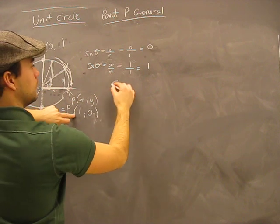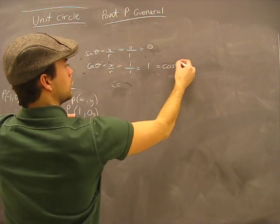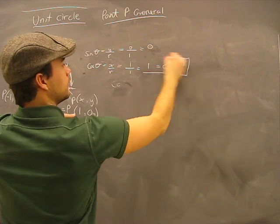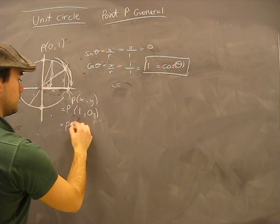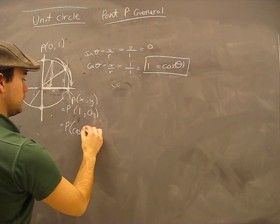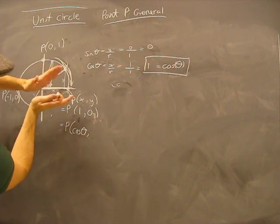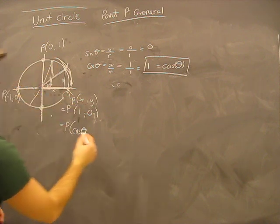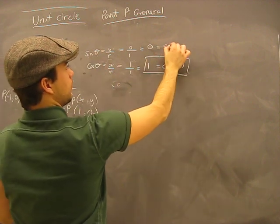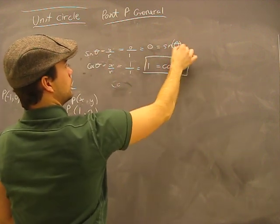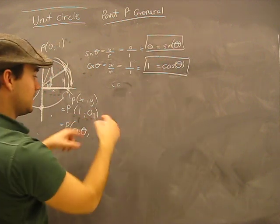Well, if this is one, well cos theta equals one, so that means this here is really the cosine of the angle. Of course in this case we've squished it to be a zero angle. And then zero - well we know that sine theta equals zero, so therefore we can put sine theta instead of zero.